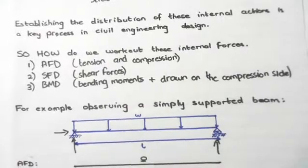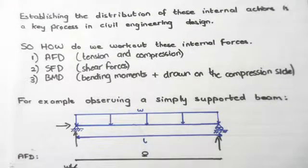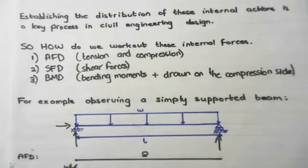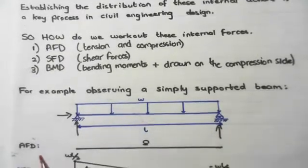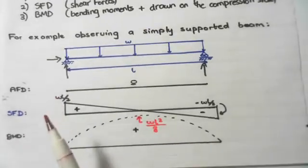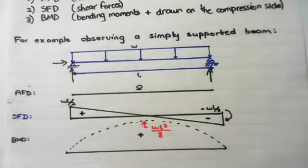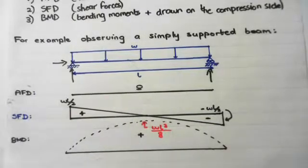If we look at this simply supported beam of length L, the pin on the left-hand side has a vertical restraint and a horizontal restraint, and the roller has a vertical restraint only — it can't move up and down but could move left and right. The following are the axial force diagram, shear force diagram, and bending moment diagram of this simply supported beam.